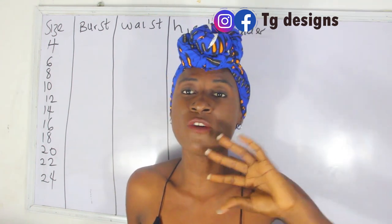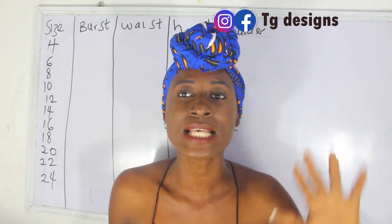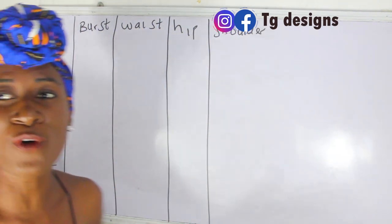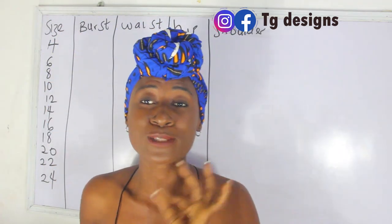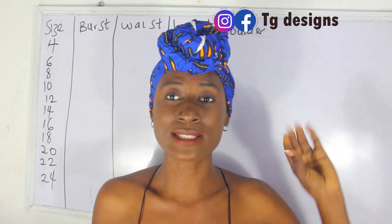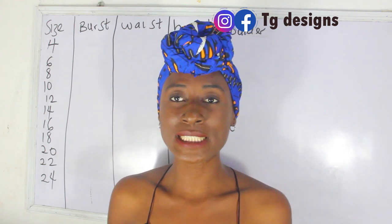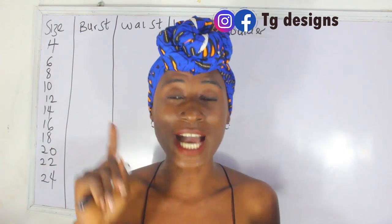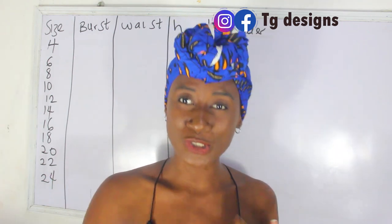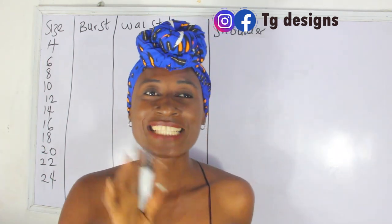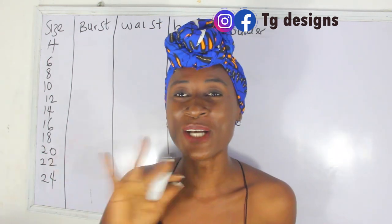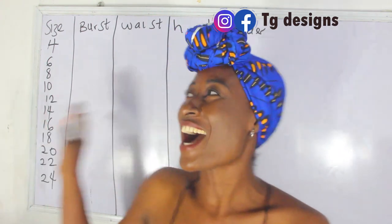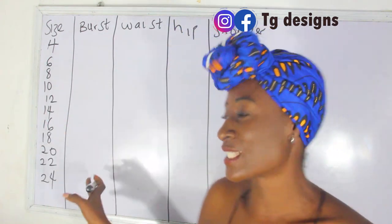So the first part of this whole series covers our sizes, starting from size 4 to size 26, which is basically the whole size range for a female body. In this series I'm also going to show you the male and children's size charts. So we have size 4 to size 24.